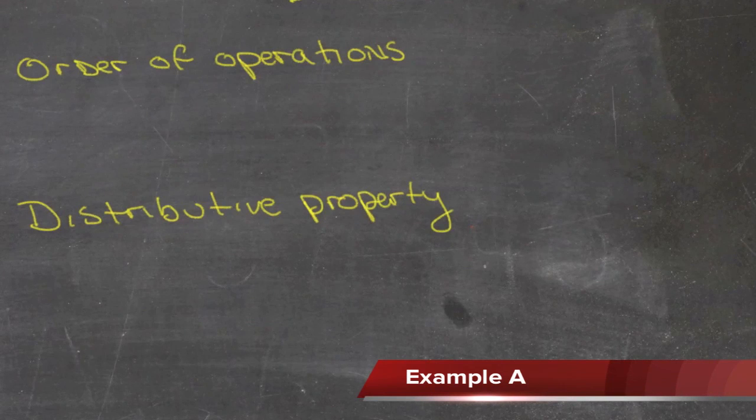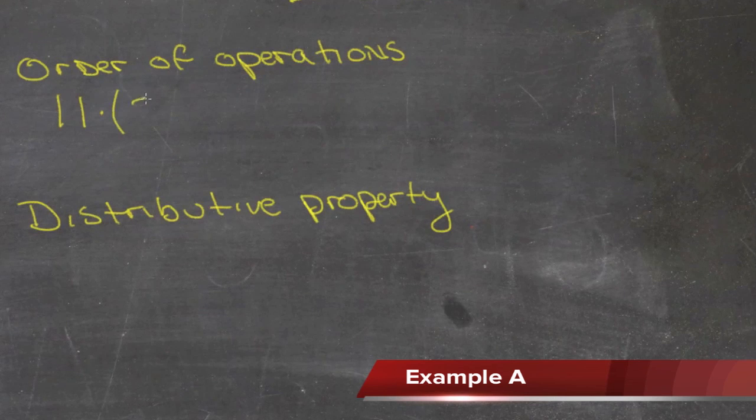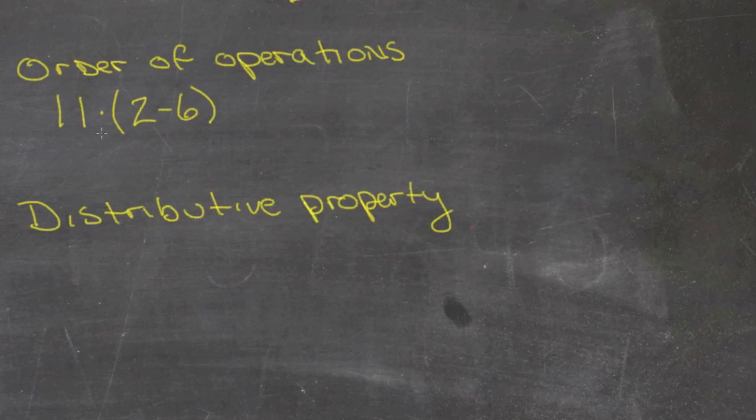We're going to multiply 11 times the quantity 2 minus 6. According to the order of operations, if we have something in parentheses, we should do it before we do multiplication. So in this case, we do the 2 minus 6 first, and we end up with negative 4.